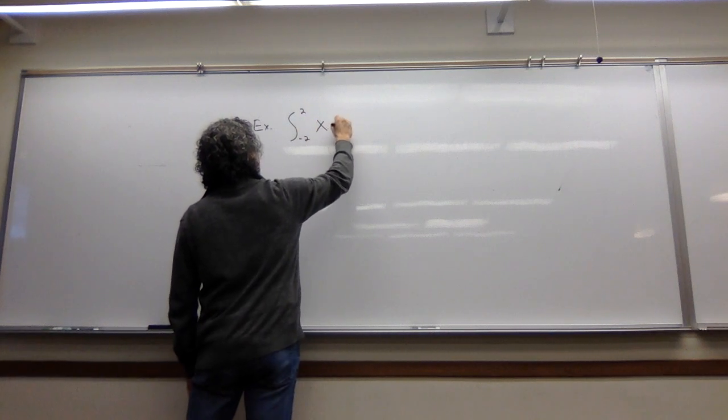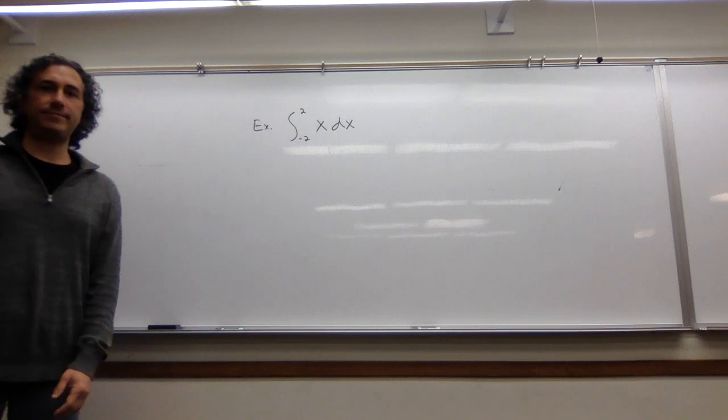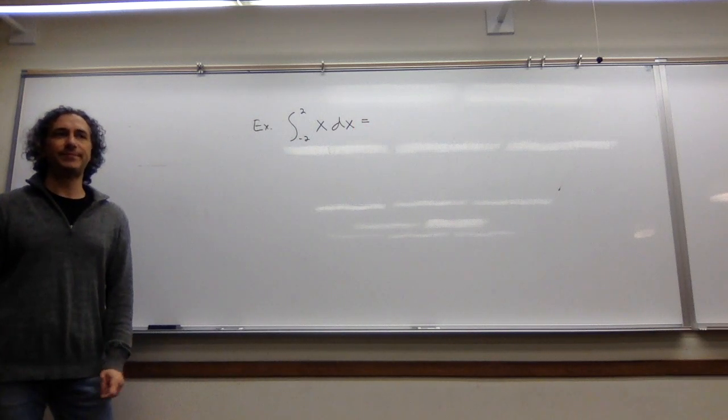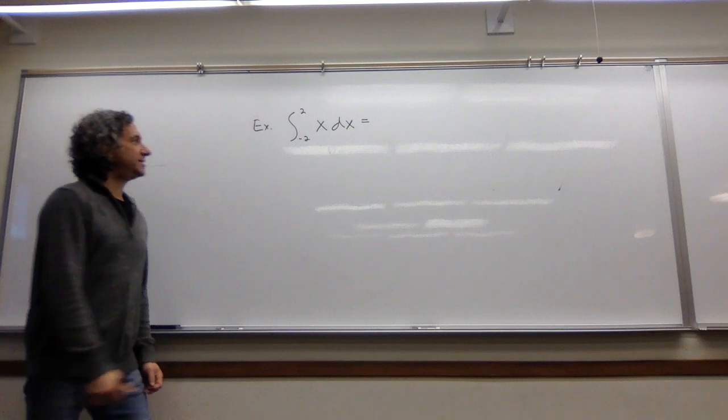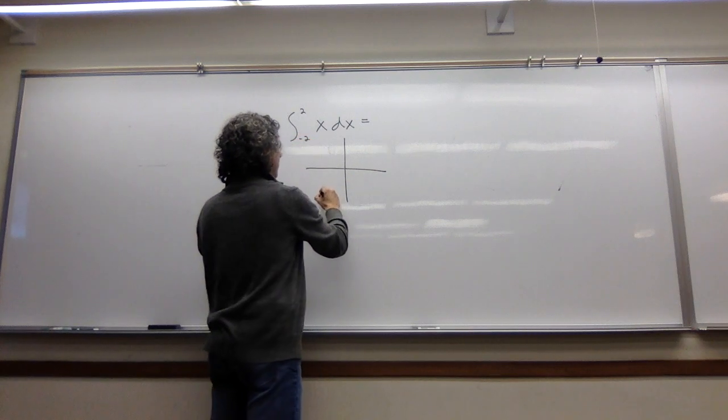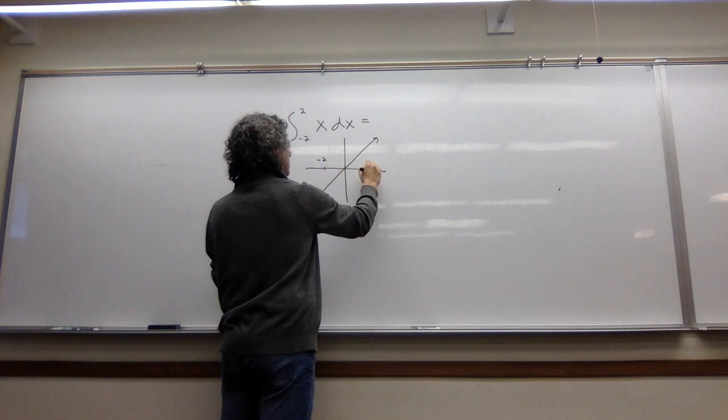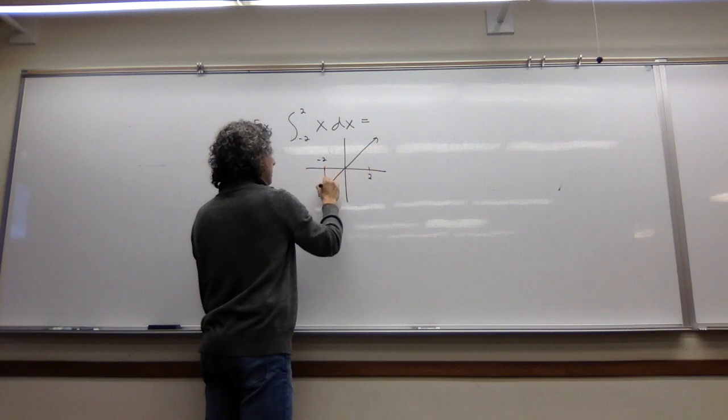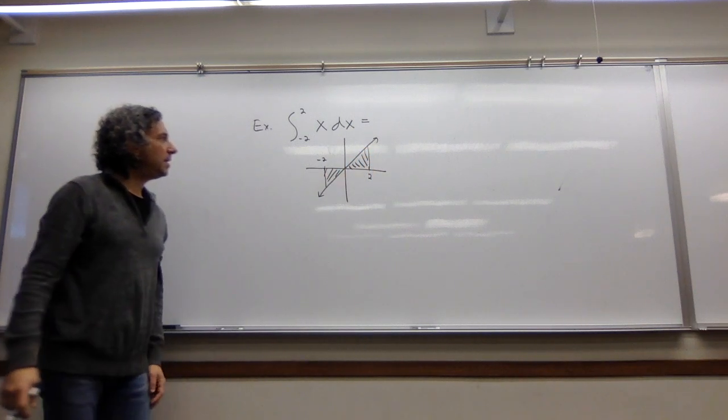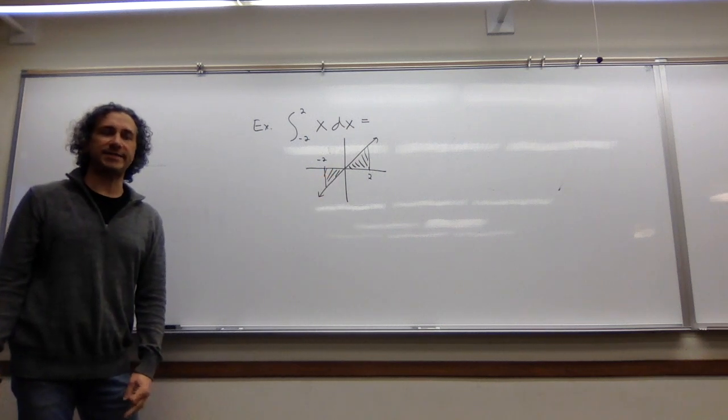Let's say I wanted to find this integral. Once again, I invite you to try it. Give it a shot before we need the answer. Let's take a look at this graph. This is f of x equals x, which looks like this. And I want the integral from minus 2 to 2. So it looks like I want this shaded region. How do we make sense of this since our function is below the axis there?